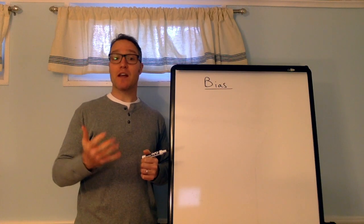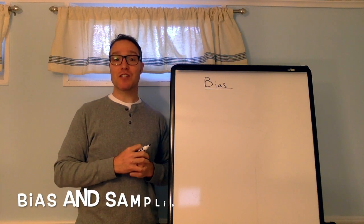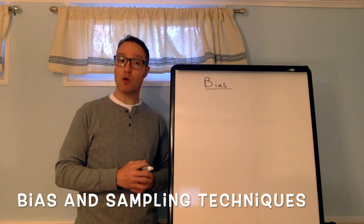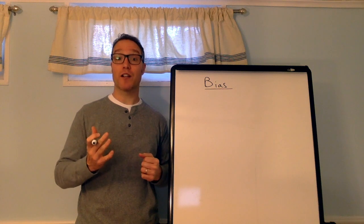So, what does bias mean? The design of a statistical study shows bias if it would consistently underestimate or consistently overestimate the value you want to know.